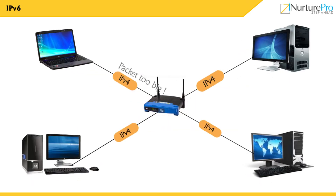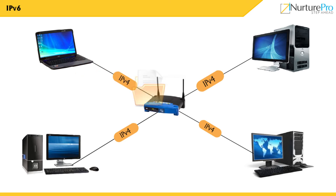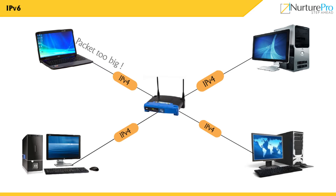IPv6 avoids the fragmentation of data packets as it supports a 1280-byte data packet size. In the case of IPv4, during packet fragmentation, the router drops the large-sized packet and sends a Type 2 message — Packet Too Big — to the host.